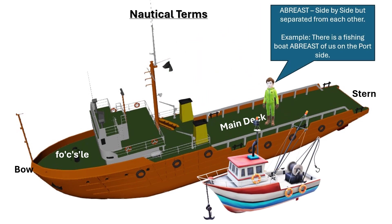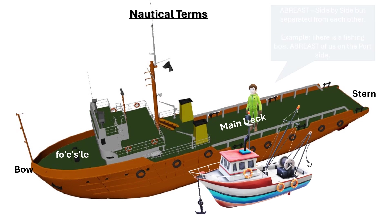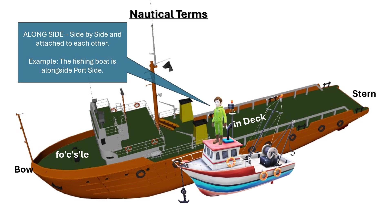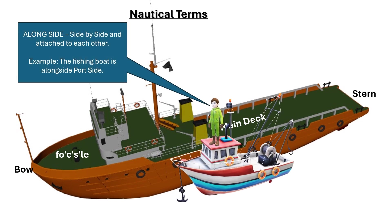Abreast is a side by side position but separated — for example, a fishing boat is abreast on the port side. Alongside means side by side and attached to each other — the fishing boat is alongside the port side.